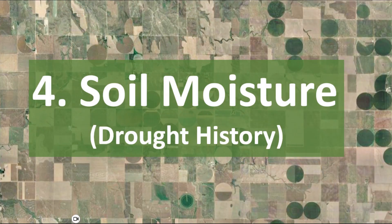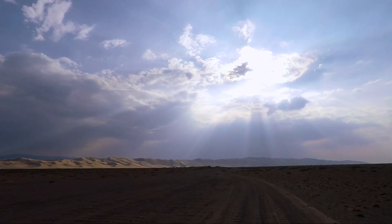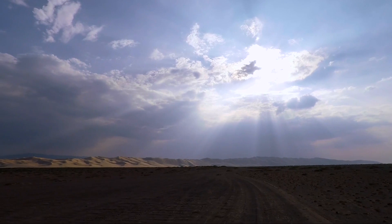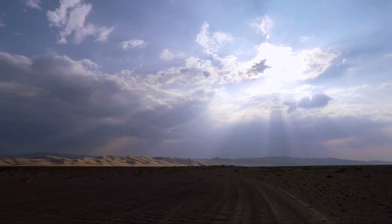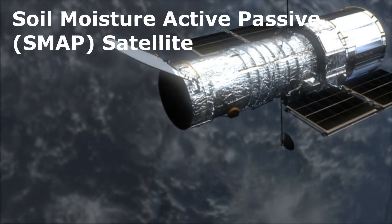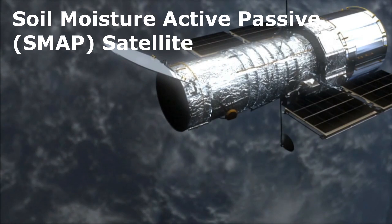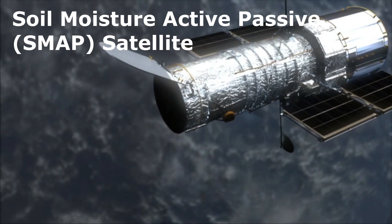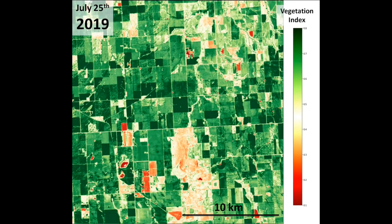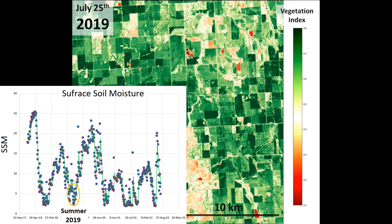Combination of water availability and prolonged hot weather could cause a deficit in soil moisture. The Soil Moisture Active Passive (SMAP) satellites provide you with a profile of soil moisture history in the area. Any prolonged low soil moisture means that croplands suffered from drought.